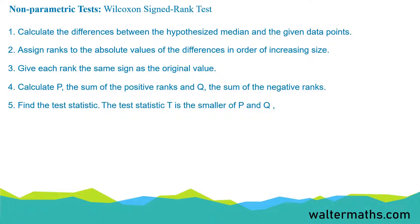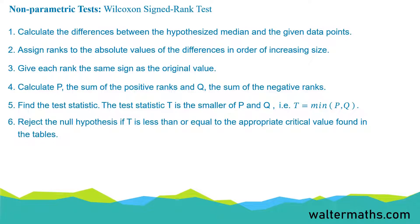Here, the test statistic T is the smaller of P and Q. Lastly, we can then reject the null hypothesis if T is less than or equal to the appropriate critical value found in the tables. I will be showing you how to use the tables in the following example.